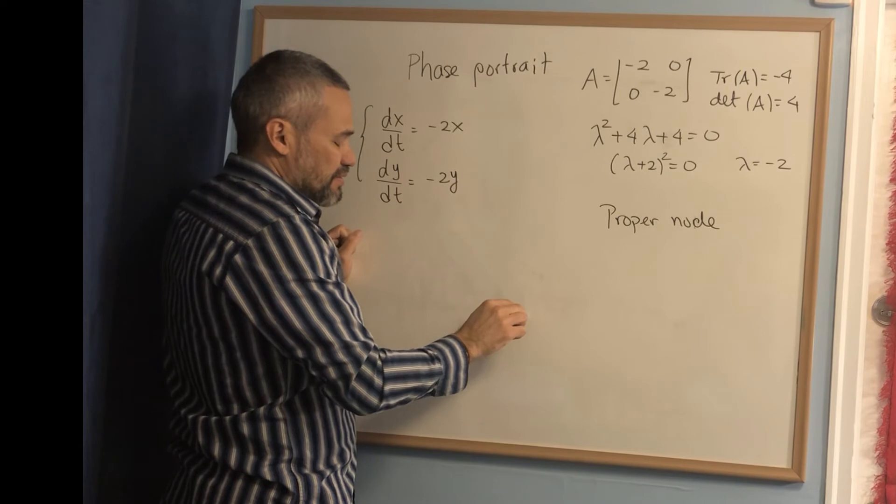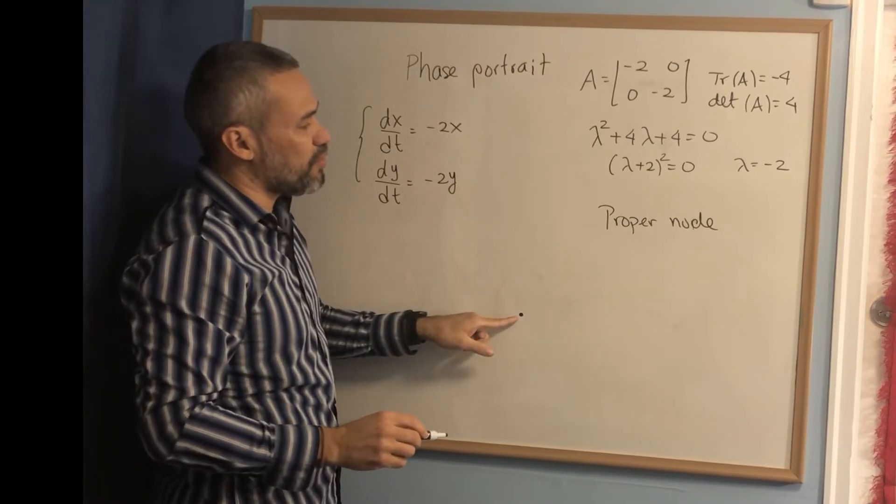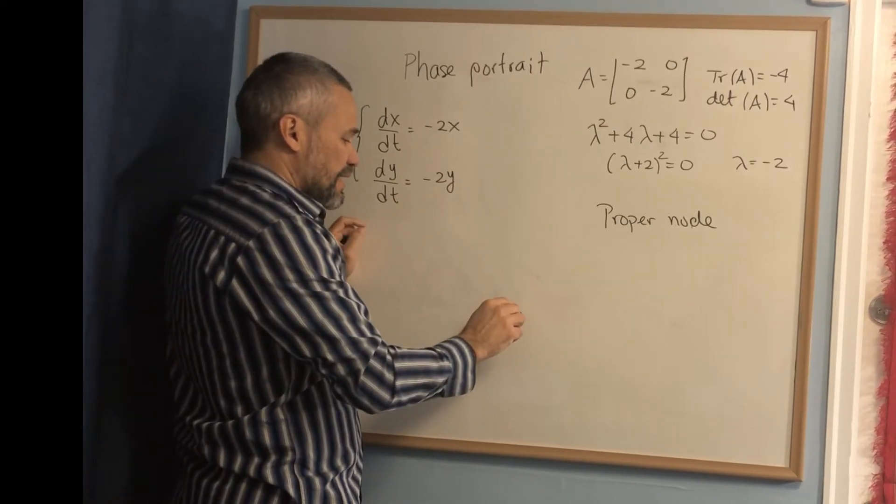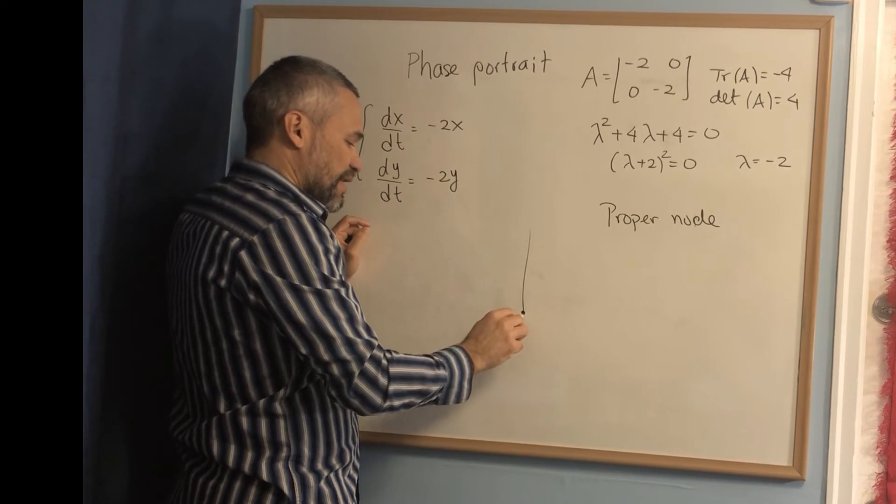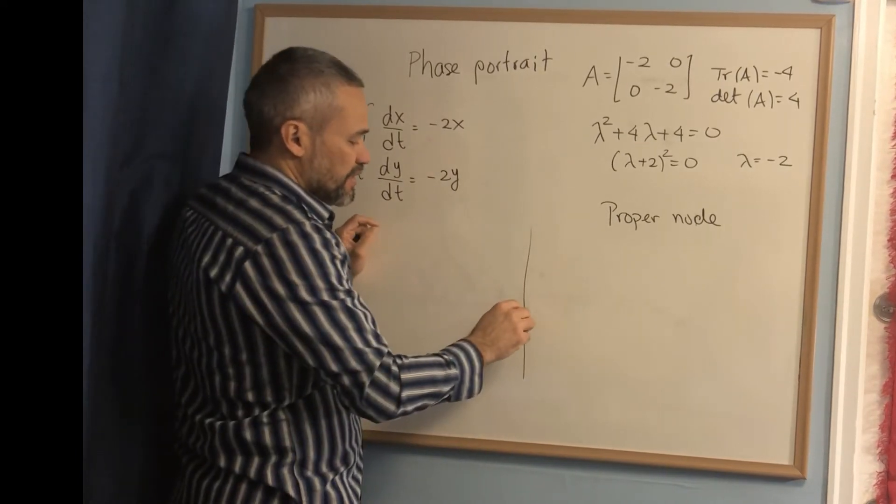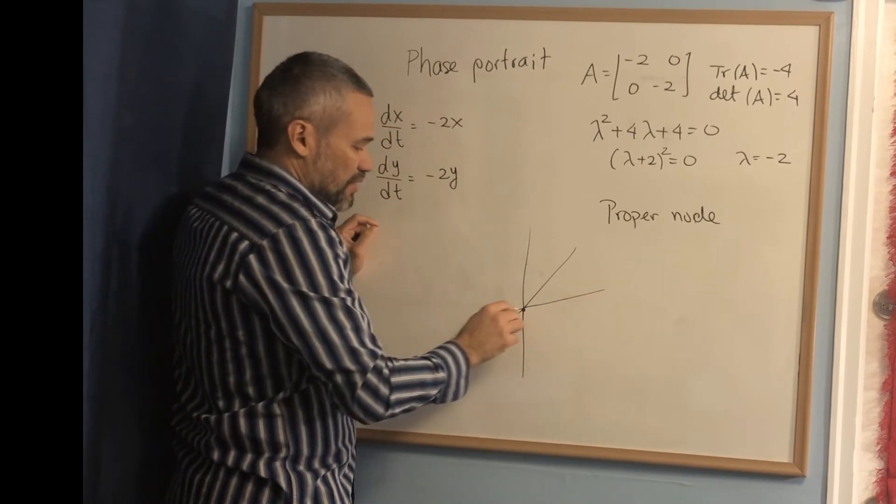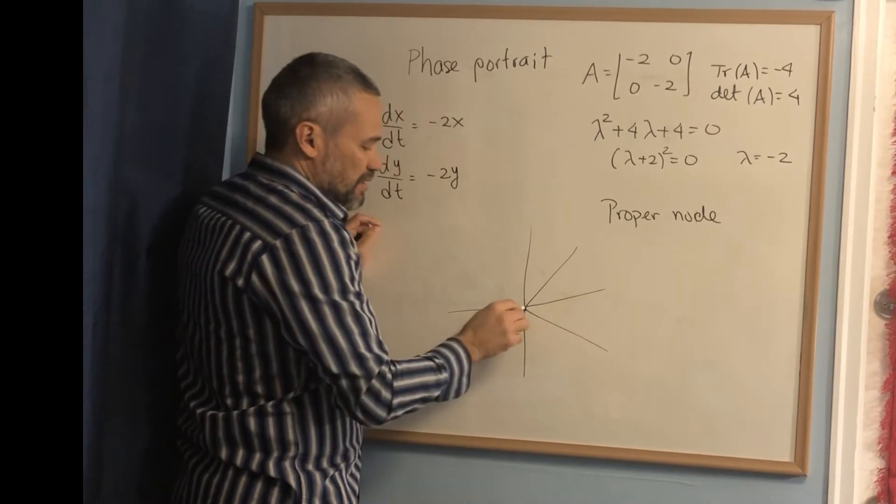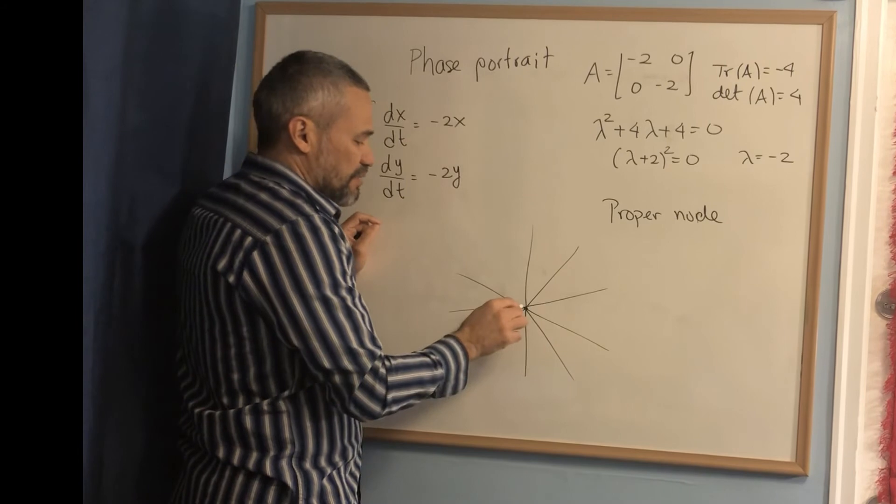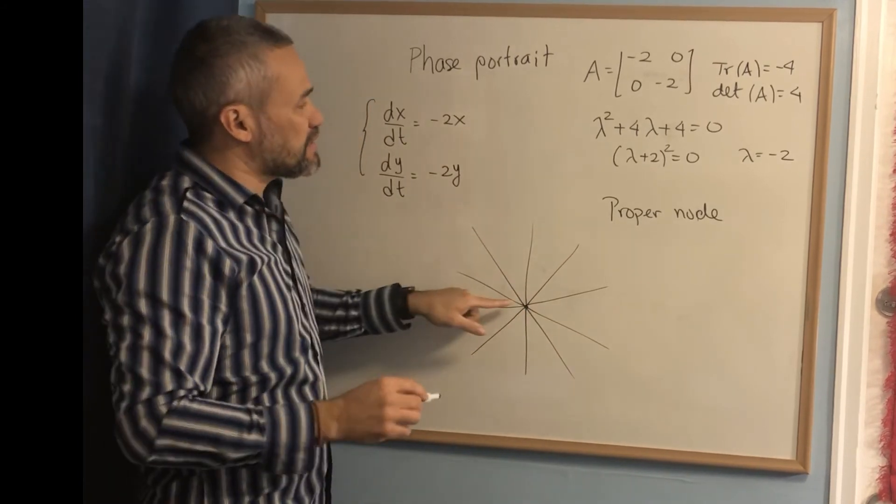It's just, we have the center, the origin, which is an orbit on its own. And then every semiline that starts from the origin is an orbit. Every semiline that starts from the origin is an orbit.